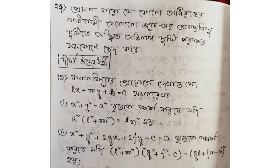Now moving on to the exercise. Number 12 says: using the condition for tangency, show that lx plus my plus n equals 0 is a straight line — number one — and x squared plus y squared equals a squared is a circle. It touches the circle.